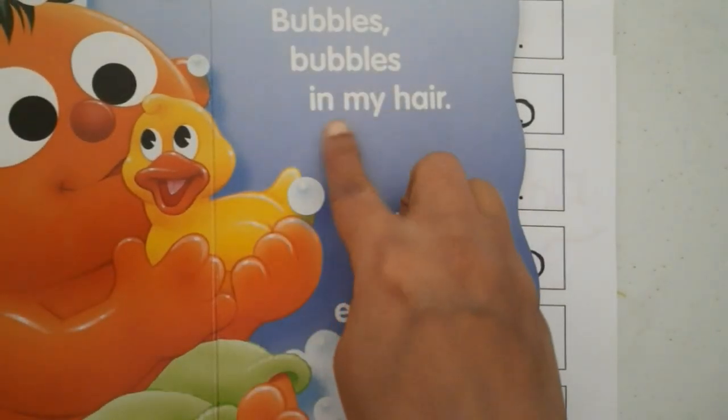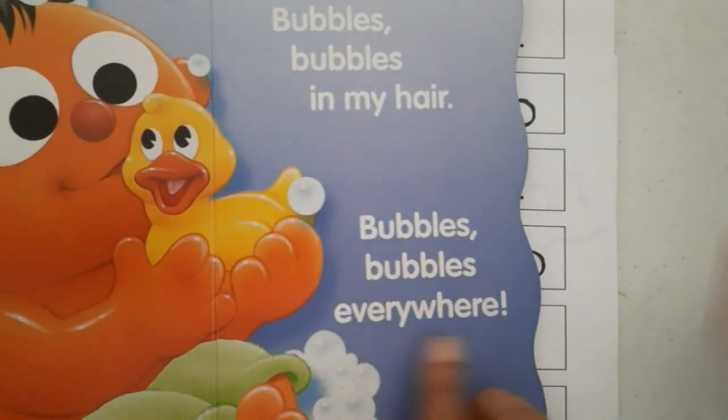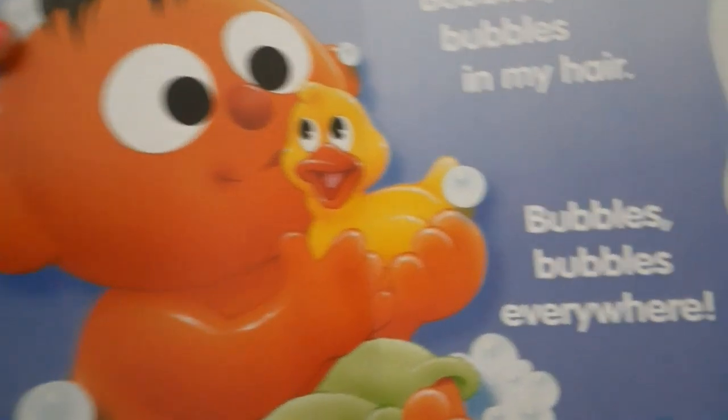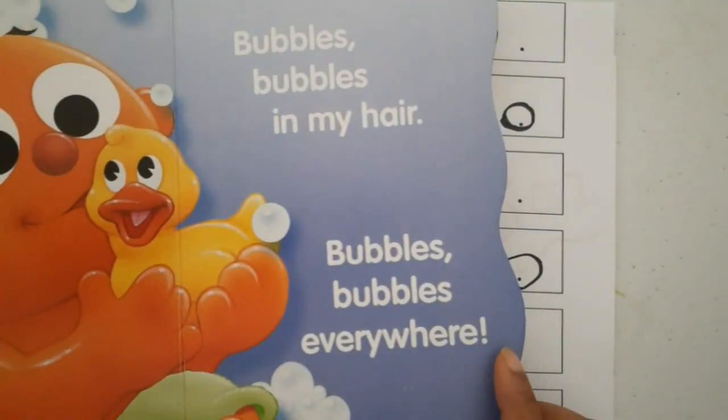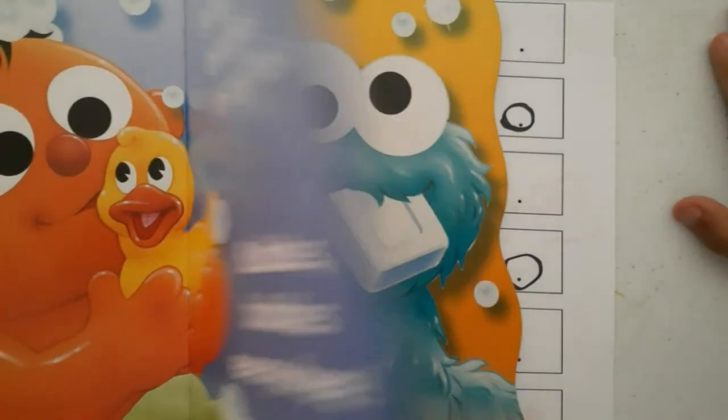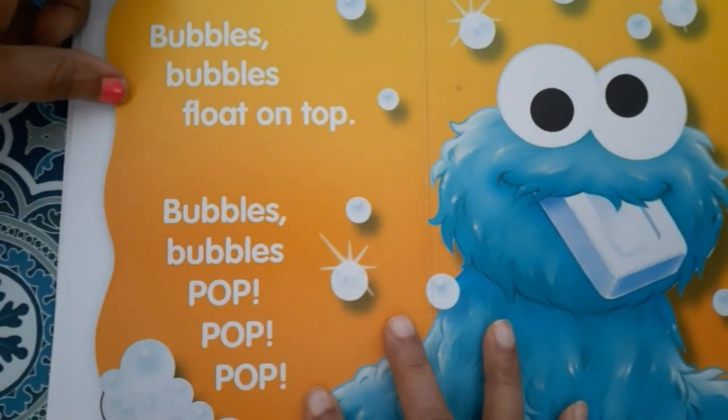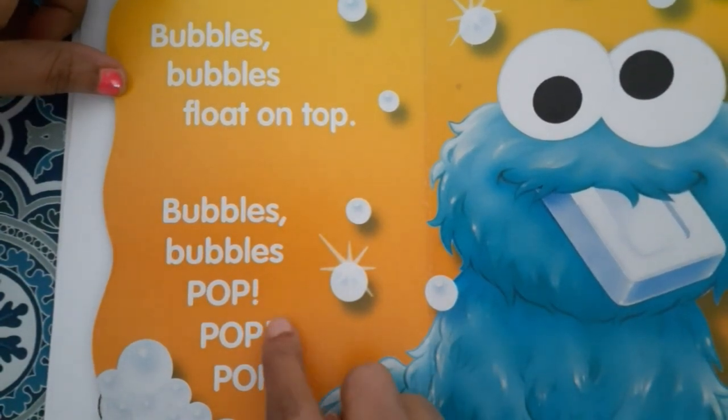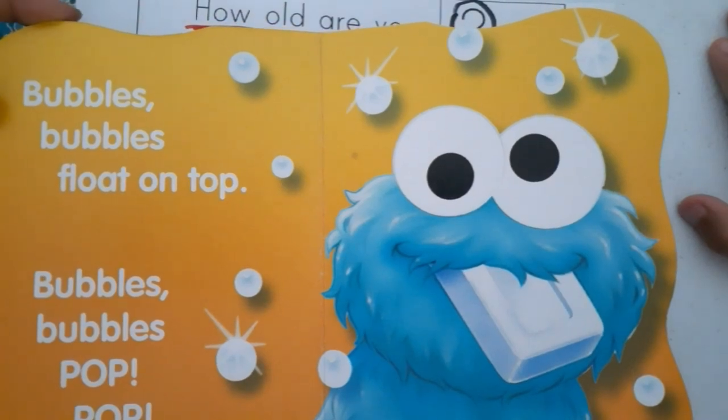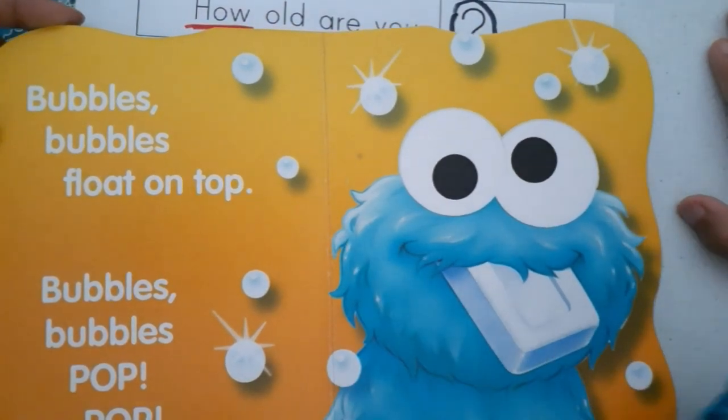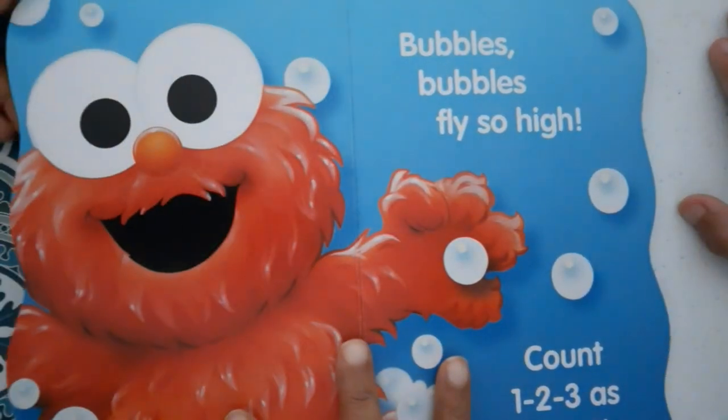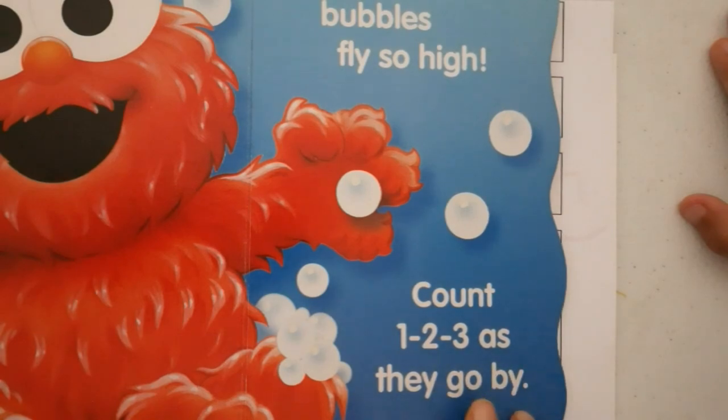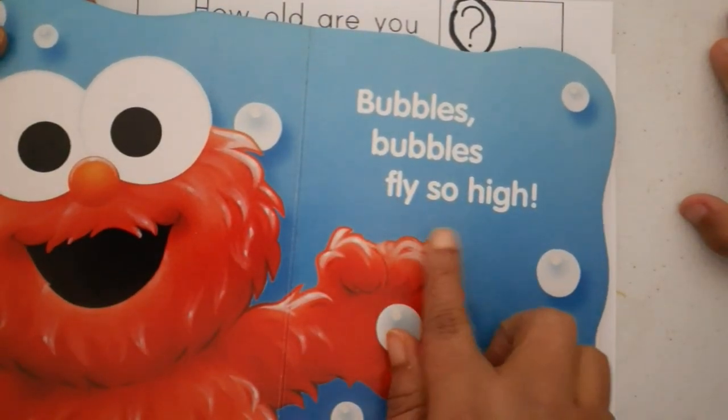Bubbles, bubbles in my hair, bubbles, bubbles everywhere! Everywhere - the sentence is so excited, so exclamation mark. Bubbles float on top. Bubbles, bubbles pop pop pop! Pop pop pop - exclamation mark, so enjoying. See bubbles everywhere, the bubbles are popping - pop sounds! Next, bubbles, bubbles fly so high. Count one two three and they go by. So bubbles fly so high, the sentence is excited.